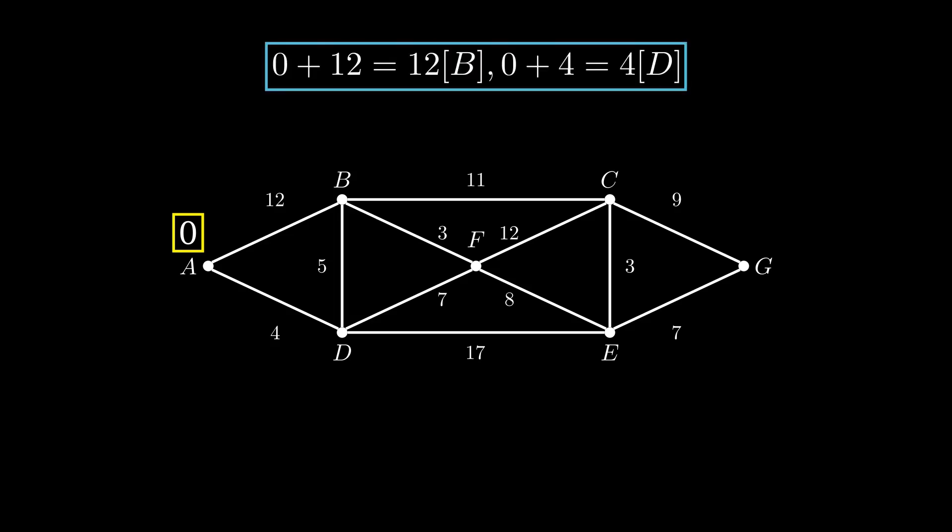We add the value of the lines we are going on to the value of the point we are on. Since the point we are on has the value of zero, this is the result. 0 plus 12 equals 12, and 0 plus 4 equals 4. But now, we only have to take the smallest result, which is 4. And that means the value of D is 4.